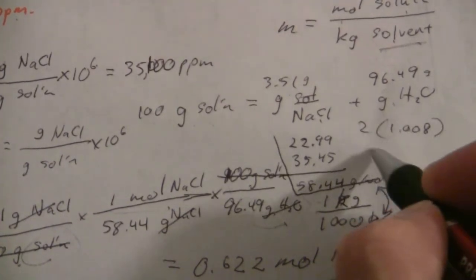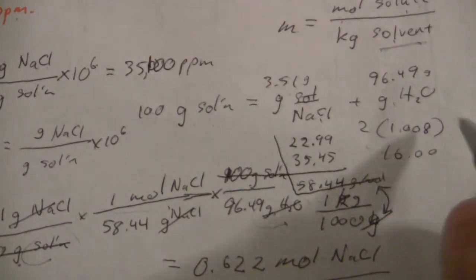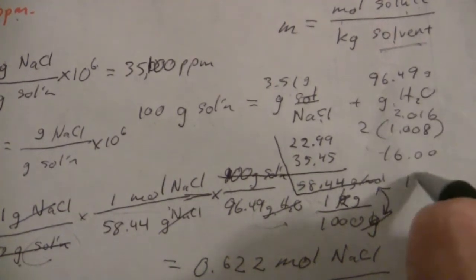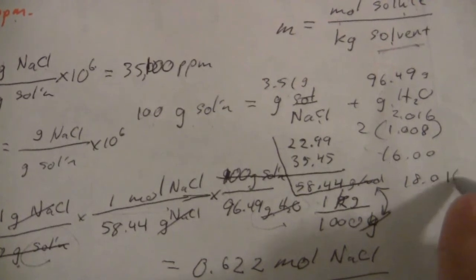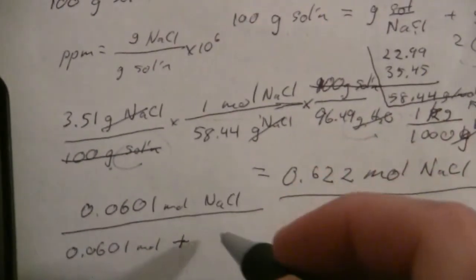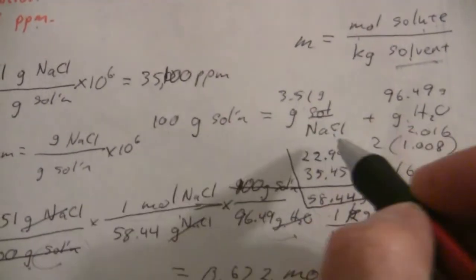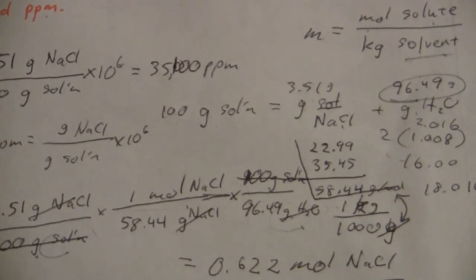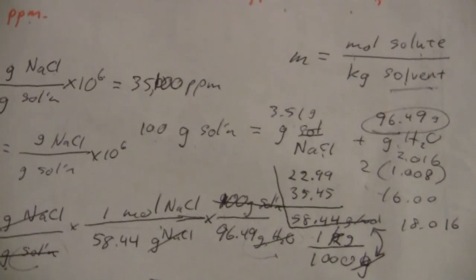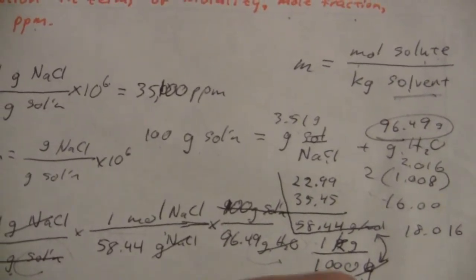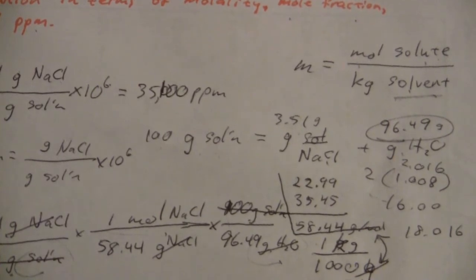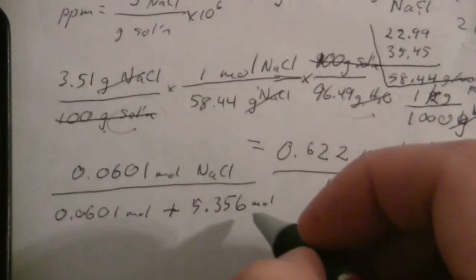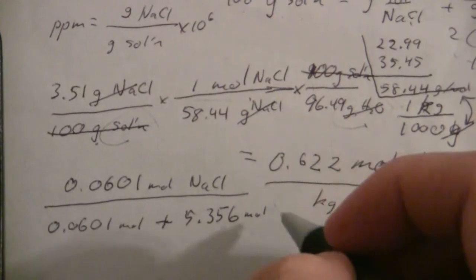We have two of those hydrogens, and then 16.00 for oxygen, giving us 2.016, so we have 18.016 grams per mole for water. We take 96.49 and divide by 18.016, and what we end up with is 5.356 moles of water.